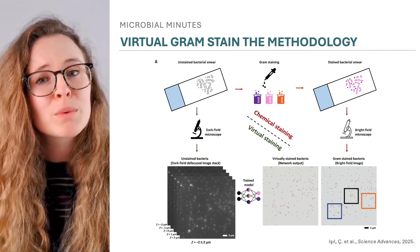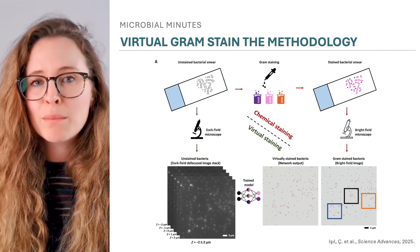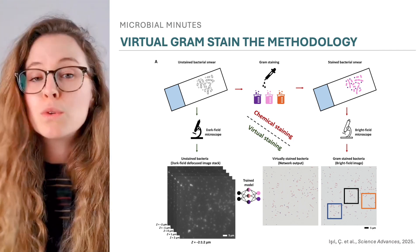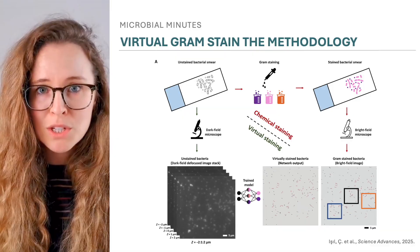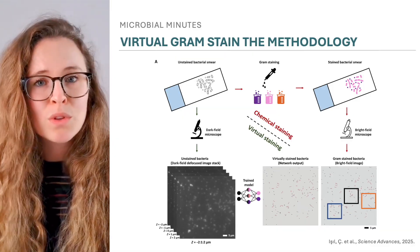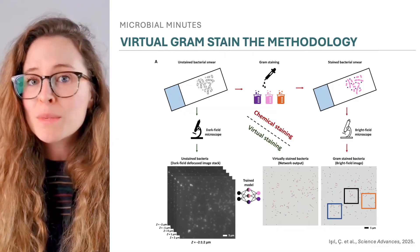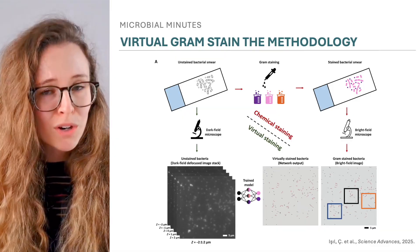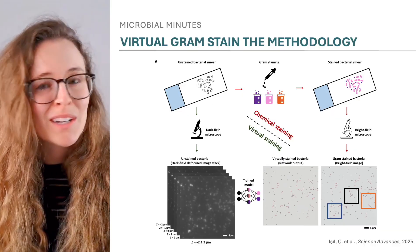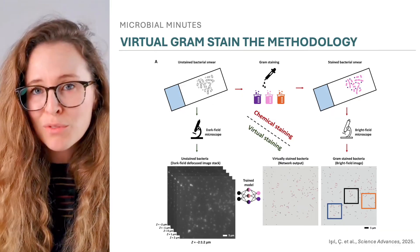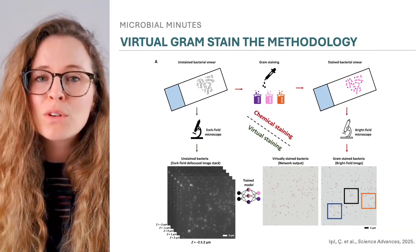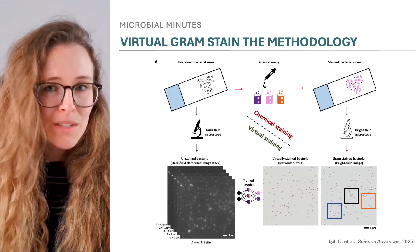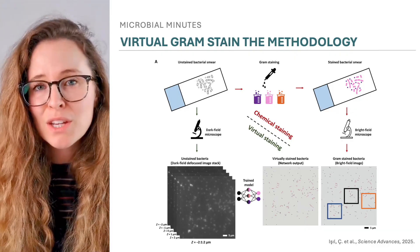The goal was to teach the model features of gram-negative and gram-positive bacteria using the dark field images and to match those features with the corresponding gram stain, so that when shown dark field images of unstained bacteria it had never seen before, the model could correctly classify the cells and virtually color them based on this classification.